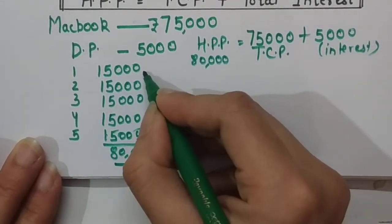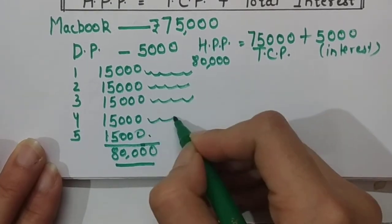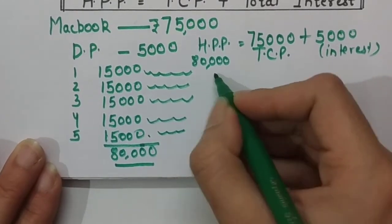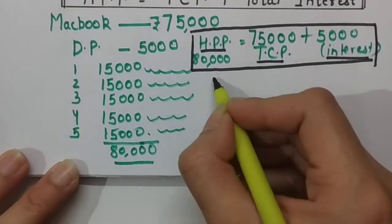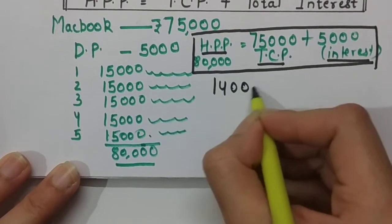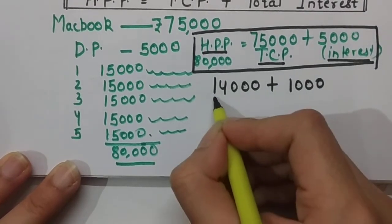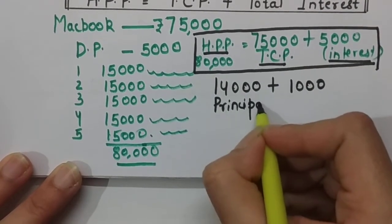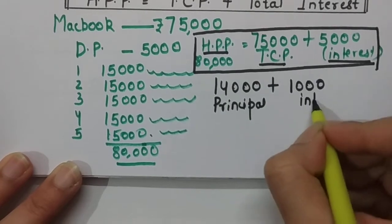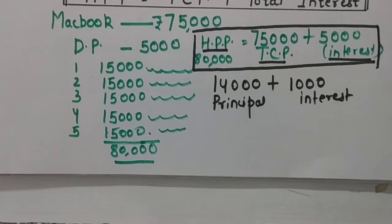Each installment of 15,000 has two components: 14,000 is the principal amount and 1,000 rupees is the interest. So every installment includes both a principal and an interest portion. I hope this example makes clear what hire purchase is.